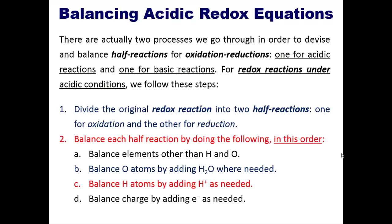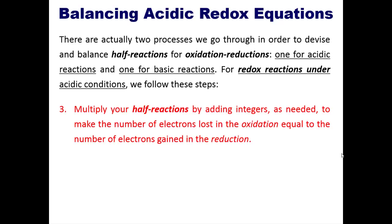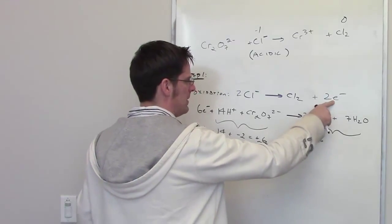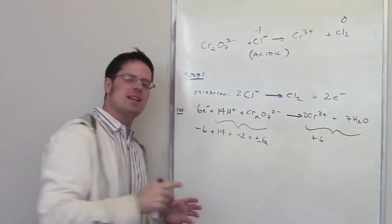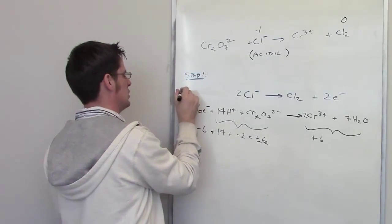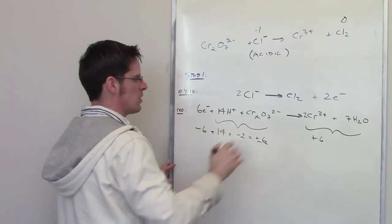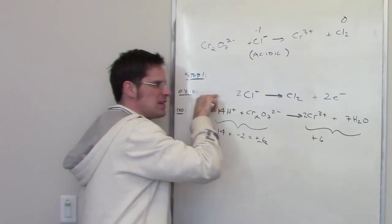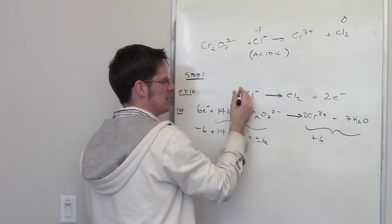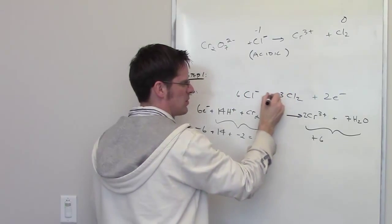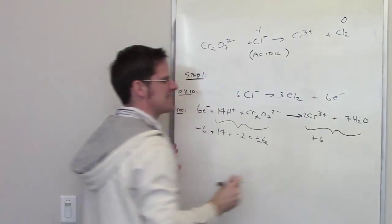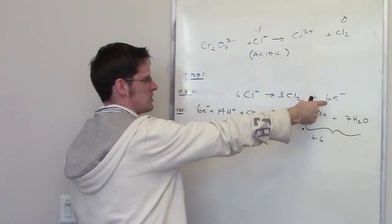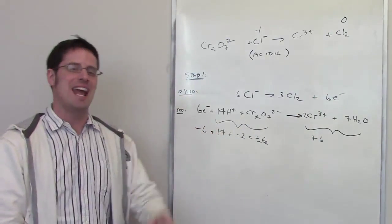The next step says multiply the half-reactions by integers as needed so that the electrons lost in oxidation equal the electrons gained in reduction. The oxidation half-reaction has 2 electrons and the reduction has 6 electrons — these don't match. Multiplying the entire oxidation half-reaction by 3 turns the 2 electrons into 6, and adjusts the other coefficients: 6 Cl⁻ → 3 Cl₂ + 6e⁻. Now both half-reactions involve 6 electrons.